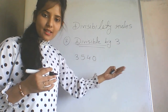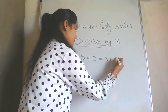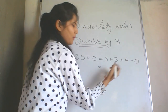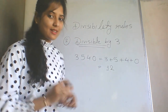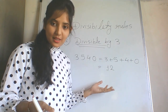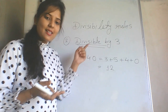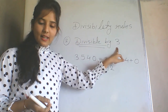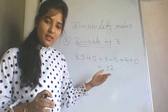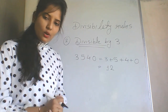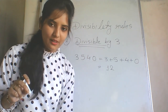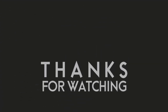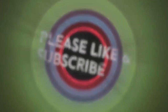Let's check a bigger number: 3540. We add all digits: 3 + 5 + 4 + 0 = 12. Again 12 comes in the 3 times table, so 3540 is also divisible by 3. When we divide by 3 the remainder will be 0 and it divides exactly. That was the divisibility rule for 3.